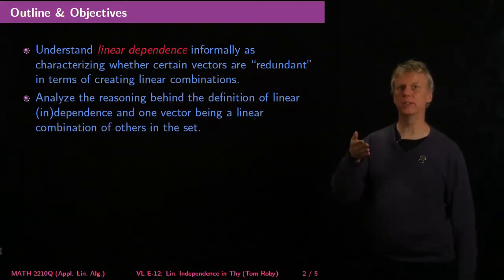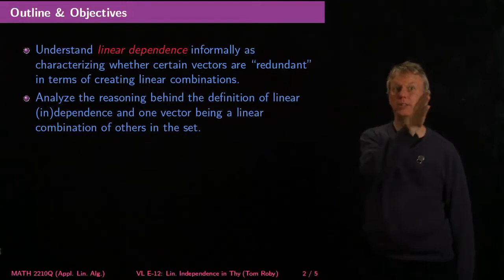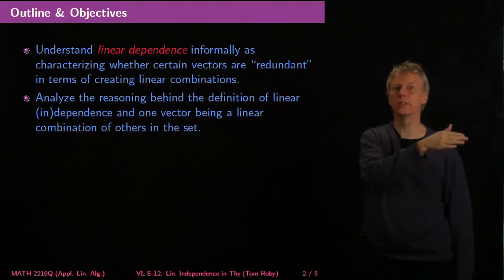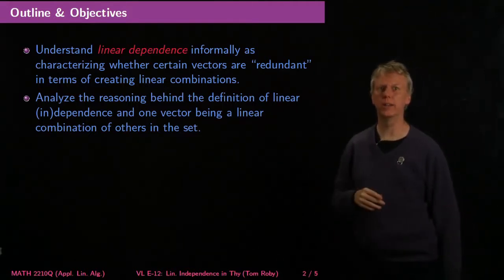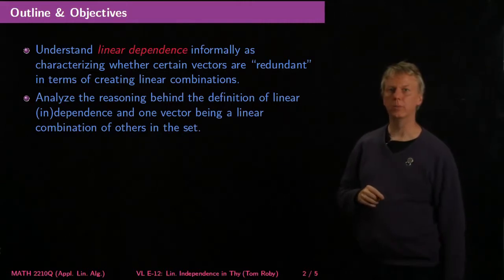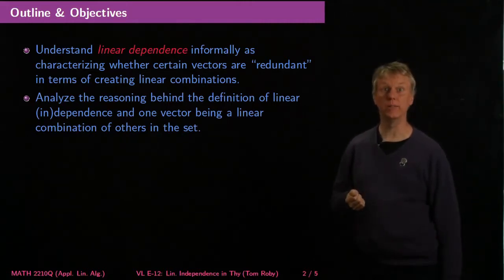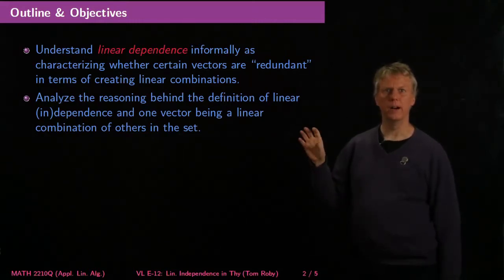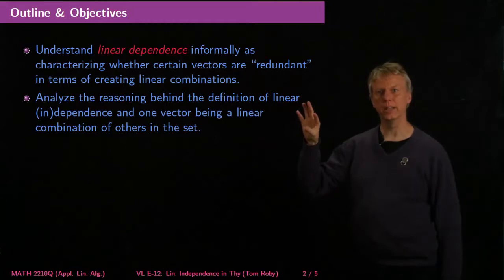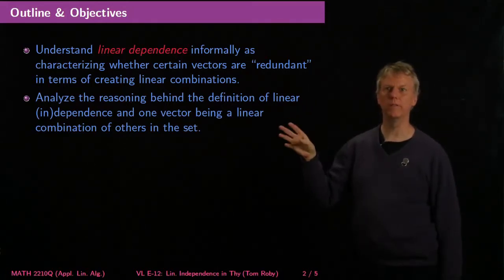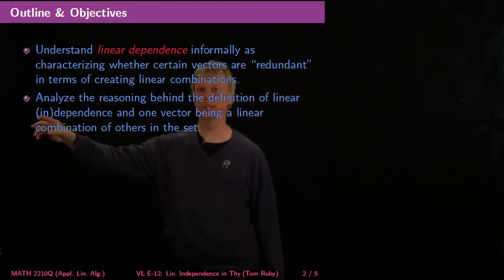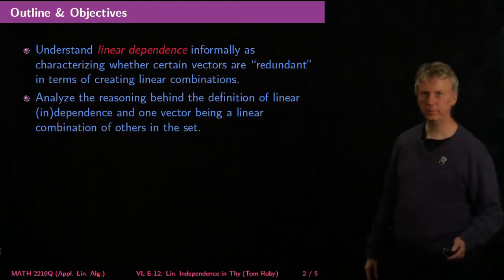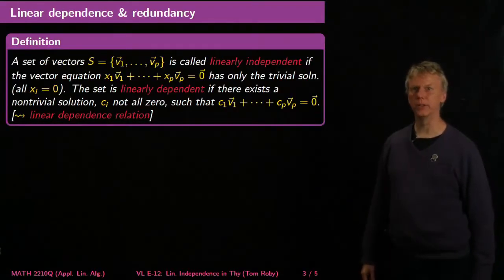In other words, if you have a set of vectors and you can make some linear combinations to get some other vectors, could you get those other vectors with fewer starting vectors? I'll give you a concrete example in a minute. We'll analyze the reasoning behind the following statement: the definition of a set of vectors being linearly dependent is the same thing as saying that one vector can be written as a linear combination of others in the set.